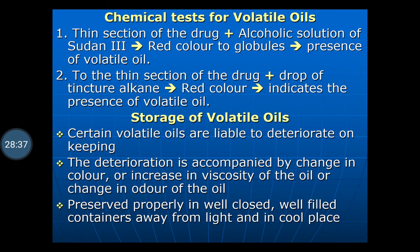Chemical test for the identification of volatile oil: a thin section of the drug is taken and an alcoholic solution of Sudan Red III is added — red color globules will develop, indicating the presence of volatile oil. Another test: to a thin section of the drug a drop of tincture of Alkanna is added — red color will indicate the presence of volatile oil.